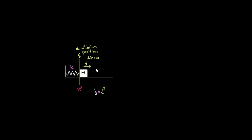There'd be no kinetic energy to start because we released the mass from rest. As the mass flies to the left, it would start gaining kinetic energy — the spring energy would start turning into kinetic energy. When the mass gets to the equilibrium position, d would be zero, so there'd be no spring energy. All of the spring energy will have turned into kinetic energy. Solving for v, the speed at the equilibrium position would be the square root of K over M times d squared.